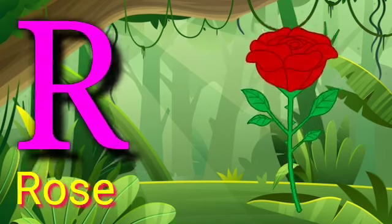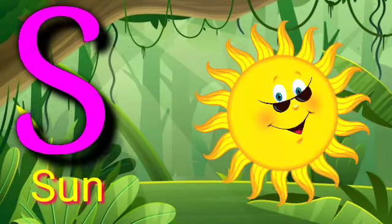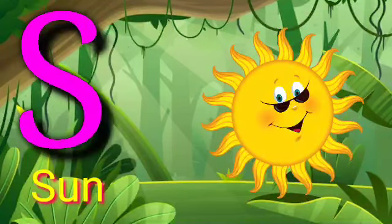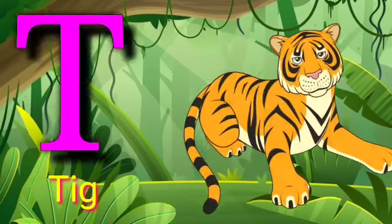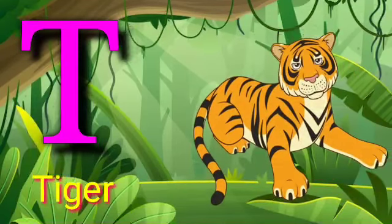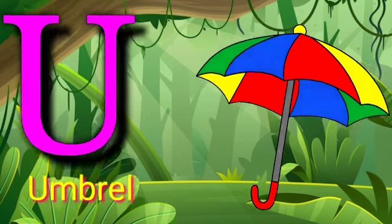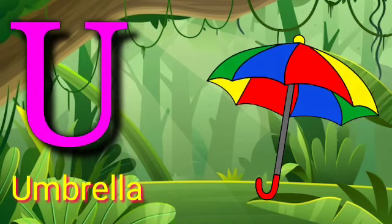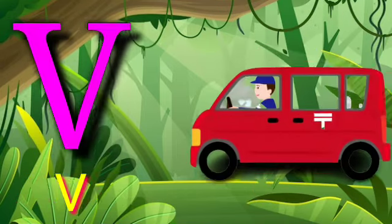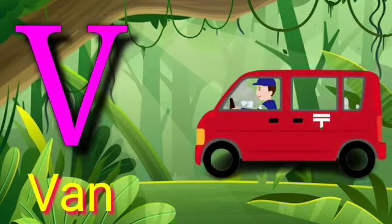R for rose. S for sun. T for tiger. U for umbrella. V for van.